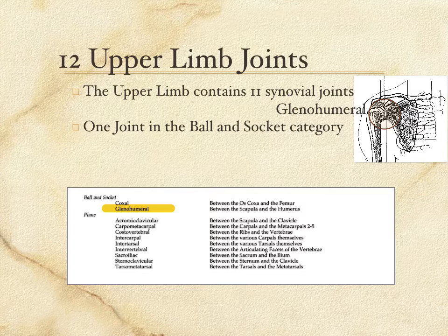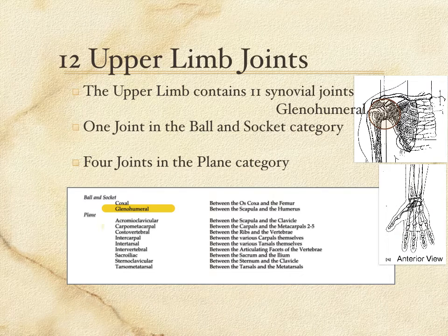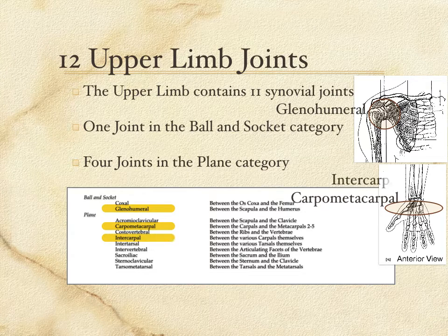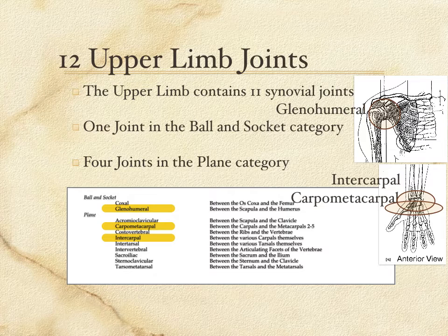In the plane category there are four joints, two of them in the hand. The other carpometacarpal joints — at the base of the four non-thumb metacarpals — are plane joints. There are also the intercarpal joints: with eight little carpal bones at the base of the hand, these are the flat surfaces where those little bones rub against one another. So there are many intercarpal joints and several carpometacarpals in the hand.